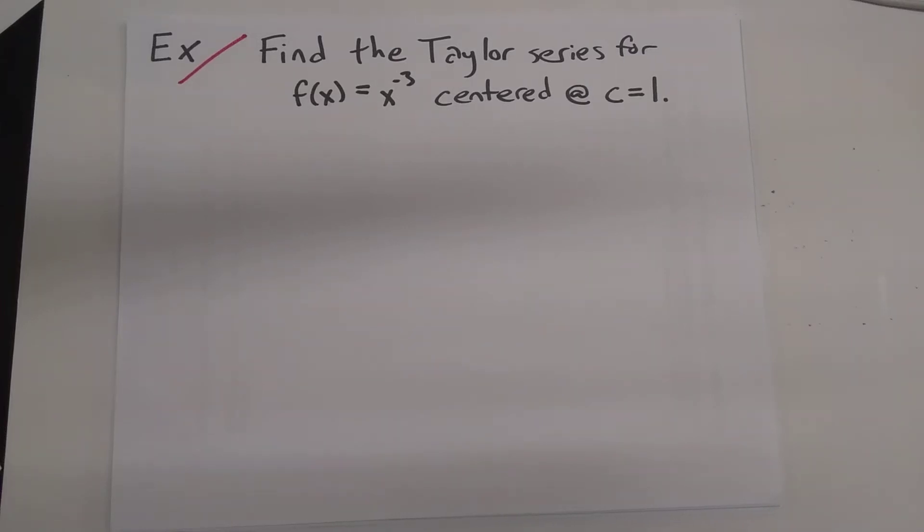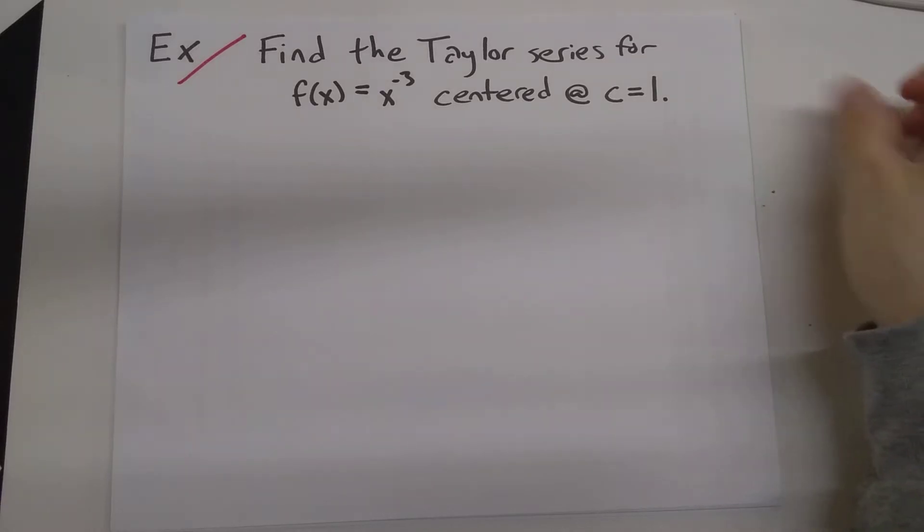Crunch out an example of finding a Taylor series from scratch. So find a Taylor series for f of x is x to the minus 3. We're looking for the center to be c is equal to 1.